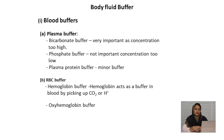Plasma buffer examples are bicarbonate buffer and phosphate buffer. RBC buffer examples are hemoglobin buffer and oxyhemoglobin buffer.